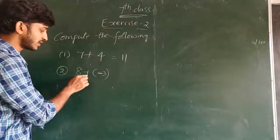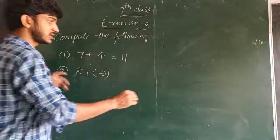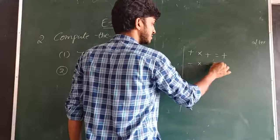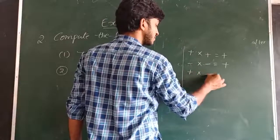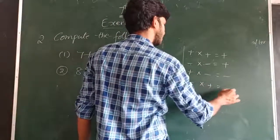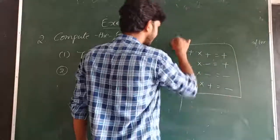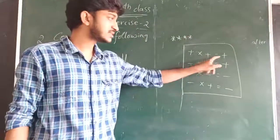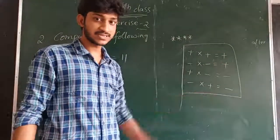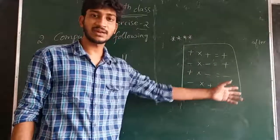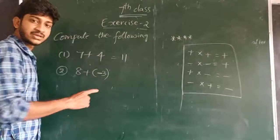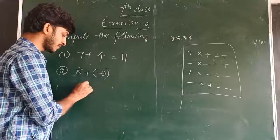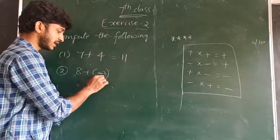To solve this problem, see here symbol operations: plus into plus equal to plus, minus into minus equal to plus, plus into minus equal to minus, minus into plus equal to minus. These four operations are very important. When two same symbols are multiplied, the answer is plus. When two symbols are different, we get minus. So here plus into minus is minus. 8 minus 3 is the answer.